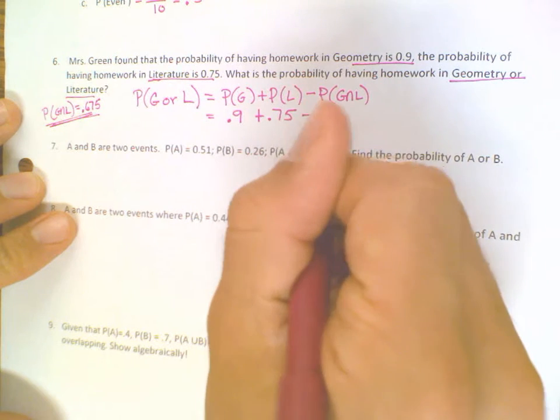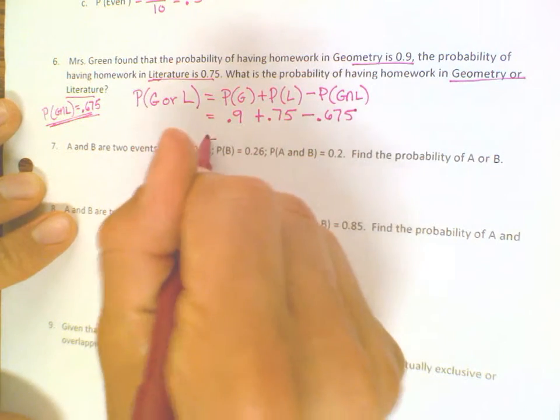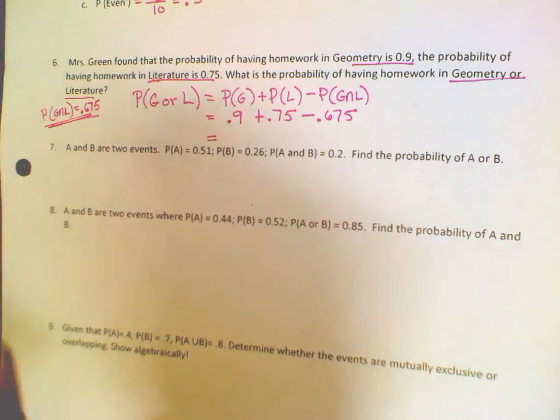So subtract the point 675 and that will give you your probability. If somebody can do that for me, that would be awesome.